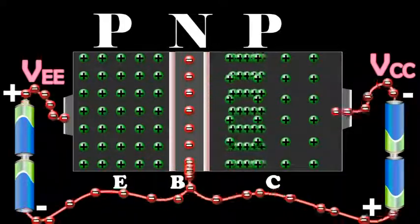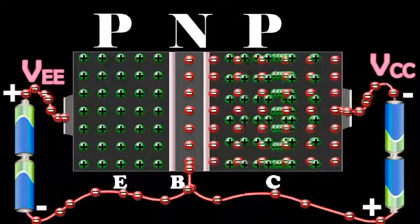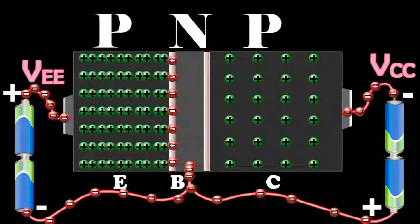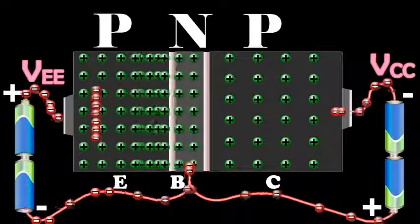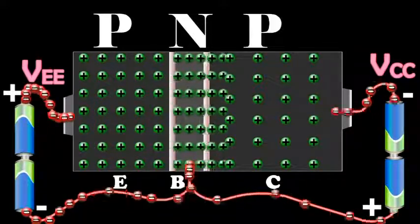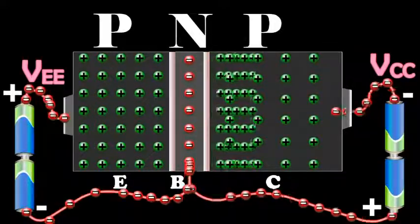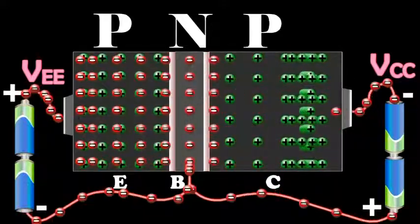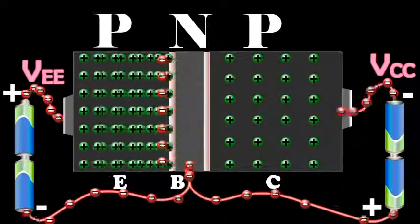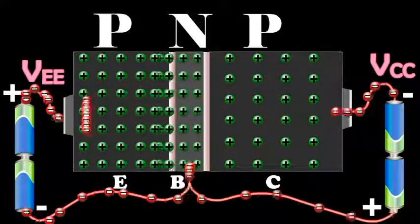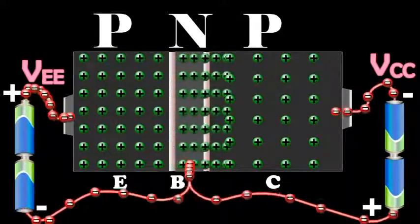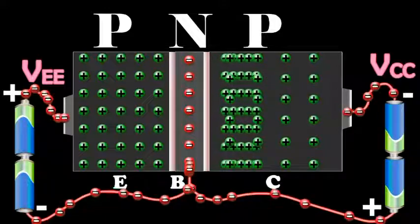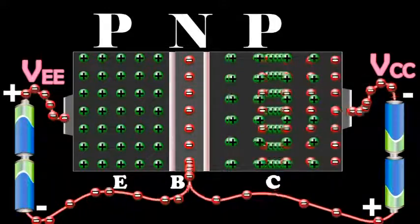The holes diffuse through the base. These holes take a very small time to flow through this region before they reach the depletion region. During this time, a very small number of holes recombine with an equal number of electrons in the base, because the base is lightly doped and very thin. This number is very small.